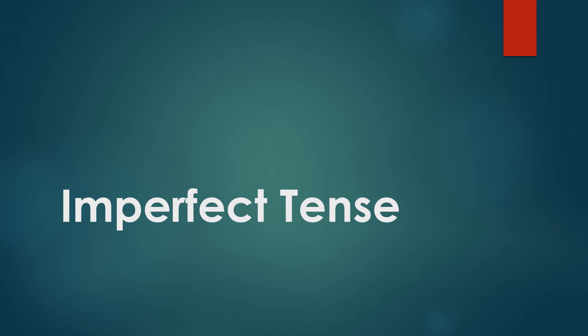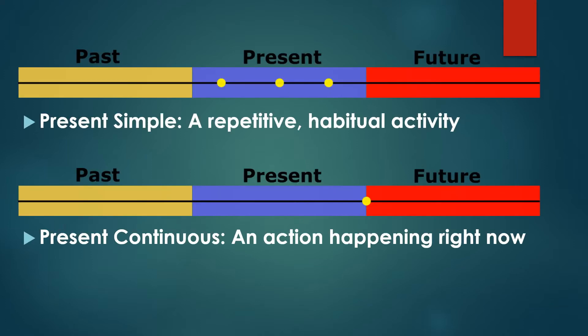Hello and welcome to stage six of the Cambridge Latin course. Today we will be having a look at the imperfect tense. So a quick recap and clarification of the present tense which we've seen in the five stages of the Cambridge Latin course so far.